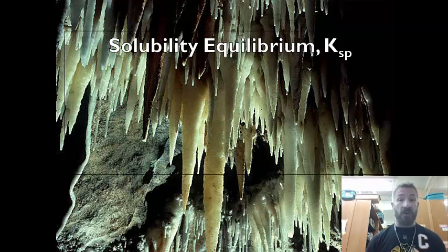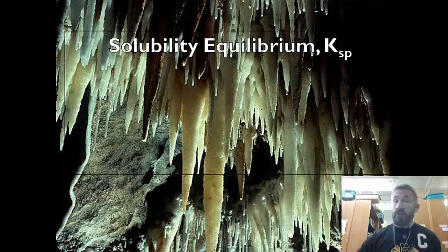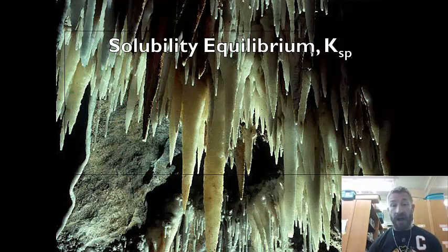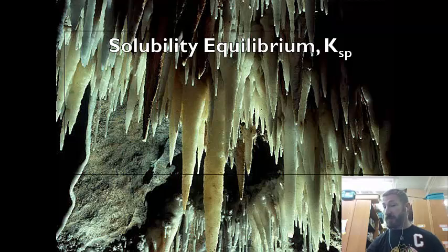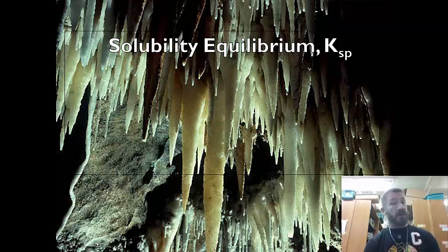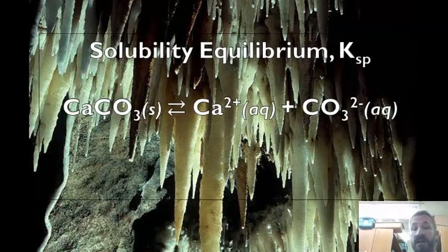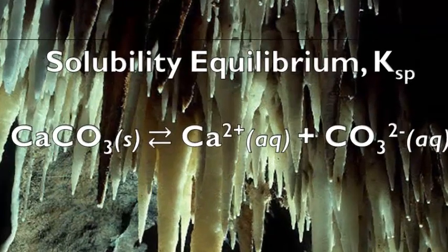Today we're going to learn about solubility equilibrium, or KSP. Solubility equilibrium is all around us. In this photograph, I have stalactites, which you find in caves — one of the largest is in Kentucky. Stalactites are composed of calcium carbonate, which is an insoluble compound that dissolves to give us calcium ions and carbonate ions.